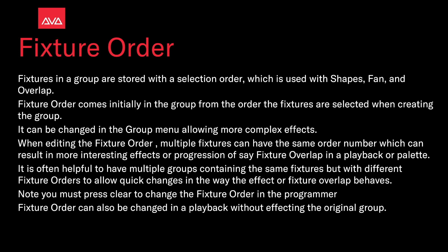Fixture order comes initially in the group from the order the fixtures were selected when creating the group. It can be changed in the group menu, allowing more complex effects. When editing the Fixture Order, multiple fixtures can have the same order number, which will result in more interesting effects or progression of Fixture Overlap in a playback or palette. It is often helpful to have multiple groups containing the same fixtures but with different Fixture Orders to allow quick changes in the way the effect or Fixture Overlap behaves.